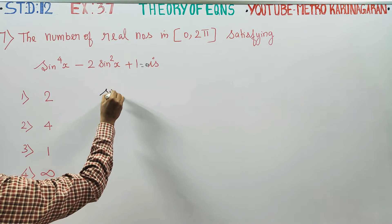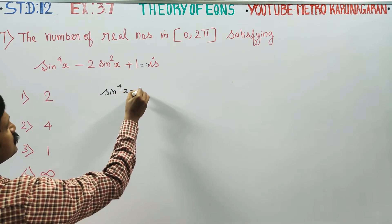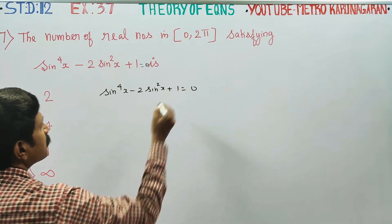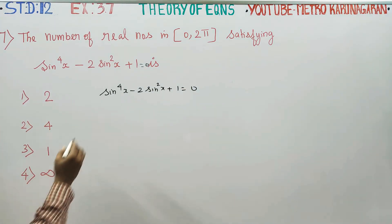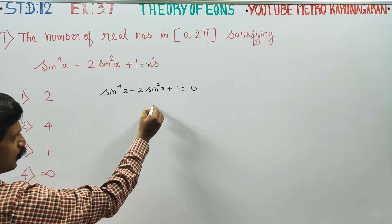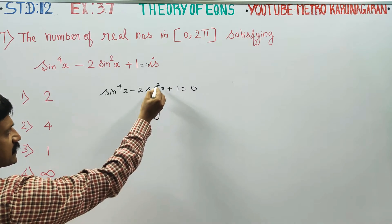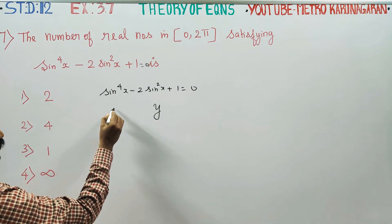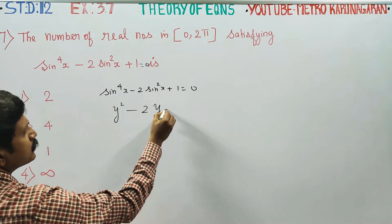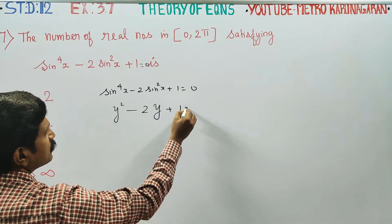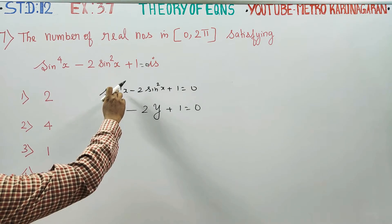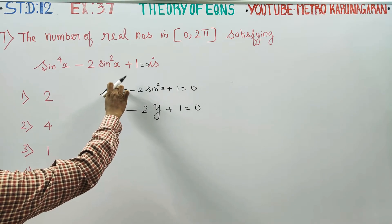So this equation is sin⁴x - 2sin²x + 1 = 0. Let's write it out. Note that sin⁴x can be written as (sin²x)².